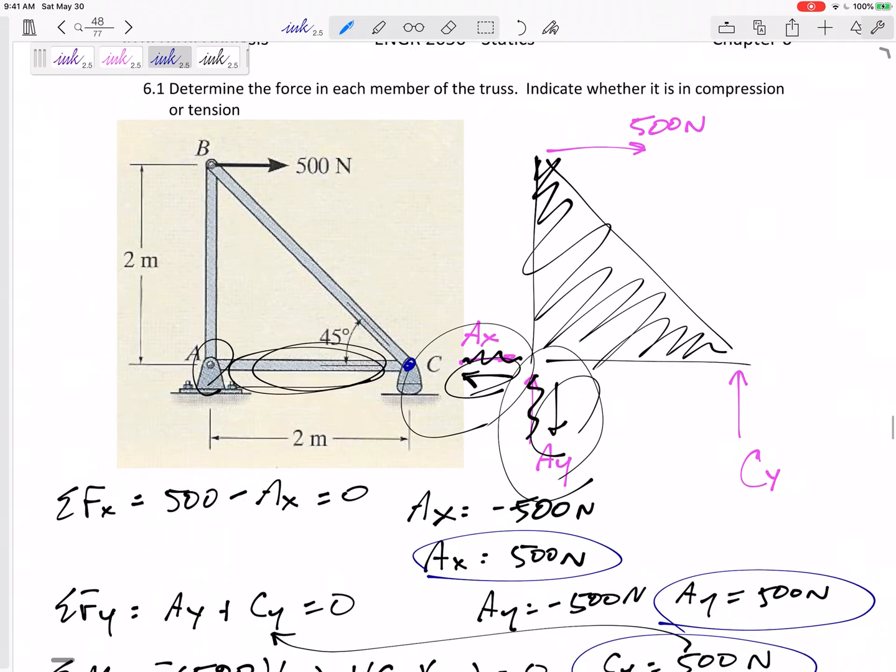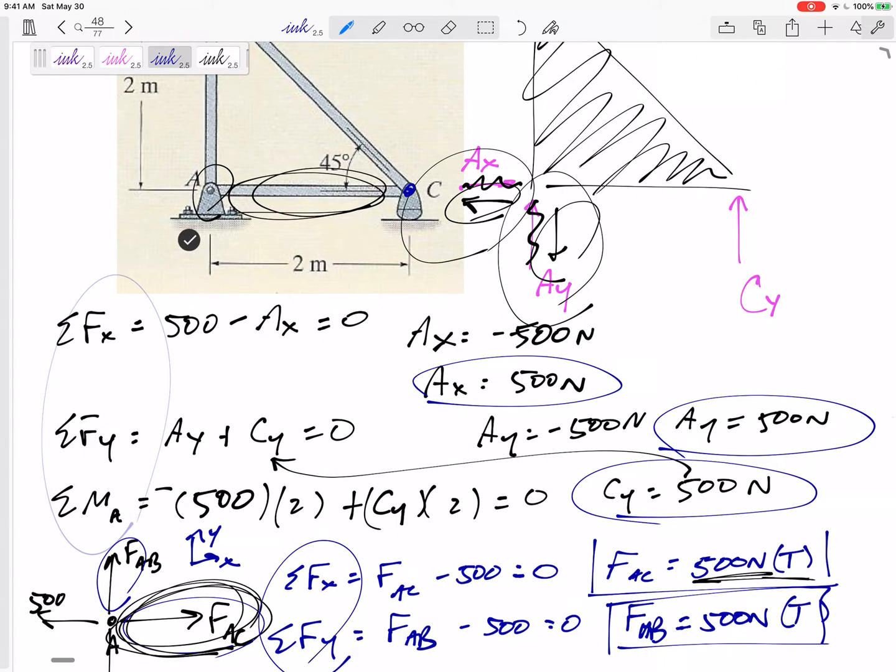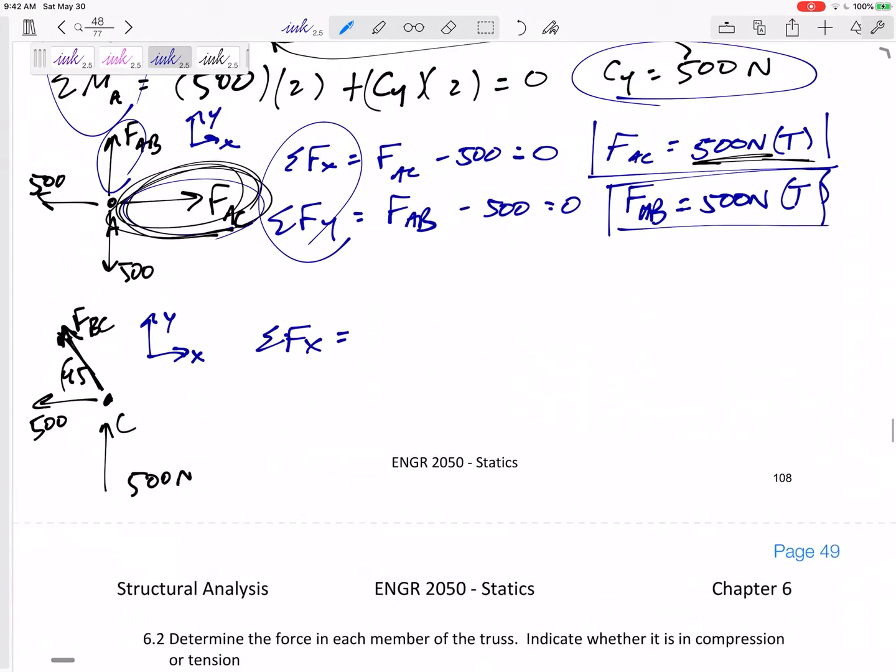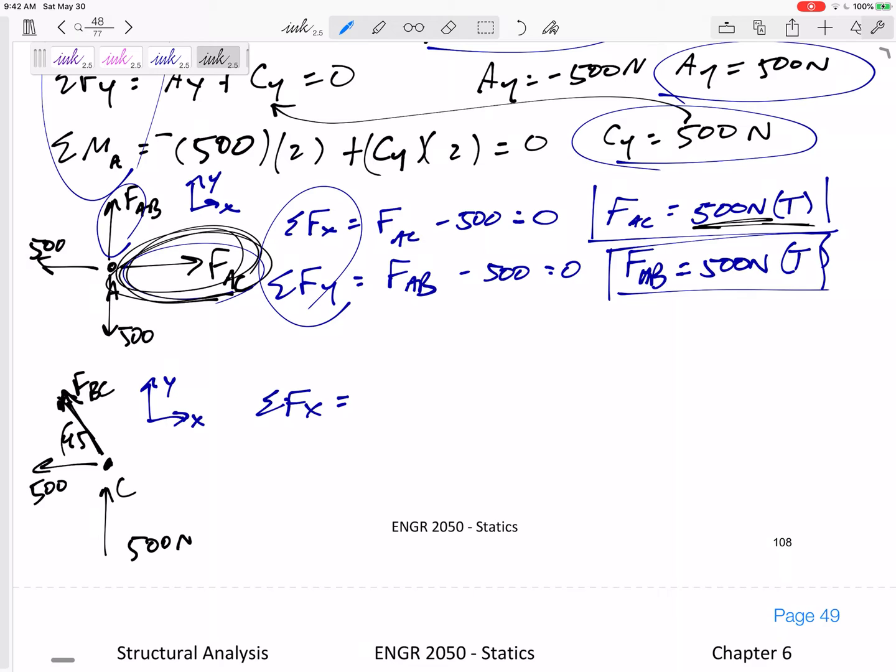Positive negative is not about tension or compression when we are summing our forces in the X and Y. When we're summing our forces, it's all about the axes. So this 500 right there is negative 500, not because it's tension or compression, it's negative because it's to the left and I'm choosing X to the right.